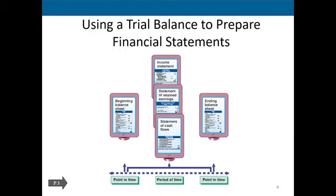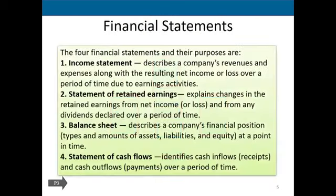There are four financial statements prepared one by one: the income statement, statement of retained earnings, balance sheet, and statement of cash flow. The income statement basically compares revenues with expenses to check the company's profitability level. The income statement is always prepared at the end of an accounting period.